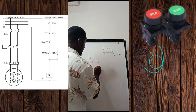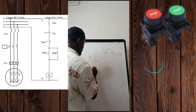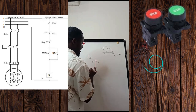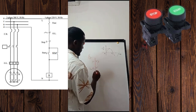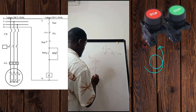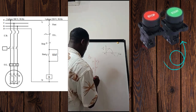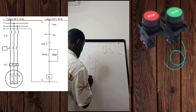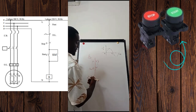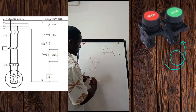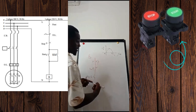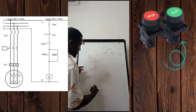Next we are going to have our stop push button, which I'll call S0. It is a stop push button with a normally closed contact. Then we move to our start push button, which is S1. This is the start push button, and that's the reason why we use a normally open contact — so that when we press it, it closes to allow current to flow from upstream going to downstream.